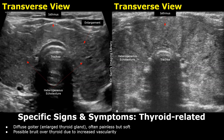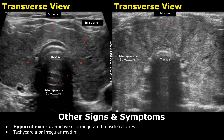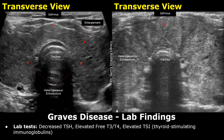The enlargement is often painless. In some cases, a possible bruit or murmur can be heard over the thyroid due to increased blood flow. Other signs and symptoms include hyperreflexia, which refers to overactive or exaggerated muscle reflexes, and tachycardia, or irregular rhythm. Lab findings are very helpful in the diagnosis of Graves' disease.